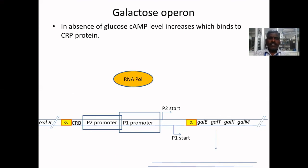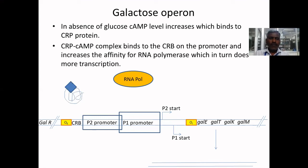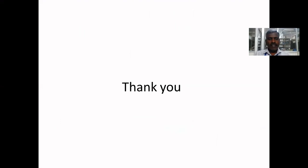In absence of glucose, cyclic AMP level increases which binds to CRP protein. This CRP-cyclic AMP complex binds to the CRP-cyclic AMP receptor binding site on the promoter and increases the affinity for RNA polymerase which in turn does more transcription. Thank you.